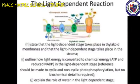Light-dependent photosynthesis, also known as the Hill reaction, was discovered by Robin Hill. This reaction takes place in the presence of grana of the chloroplast. Photosynthetic pigments absorb the light energy and convert it into chemical energy — ATP and NADPH2.